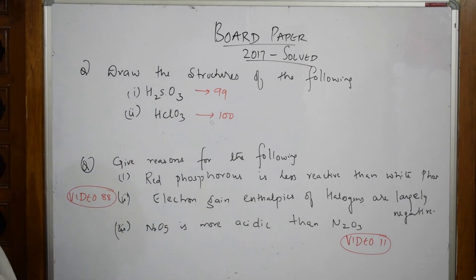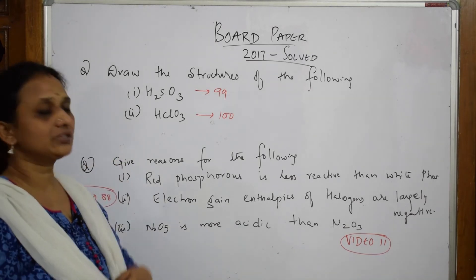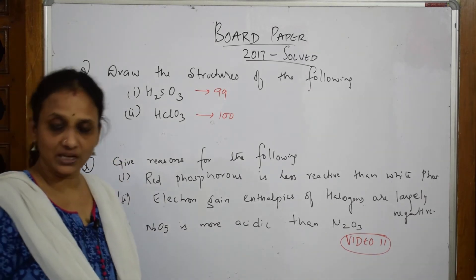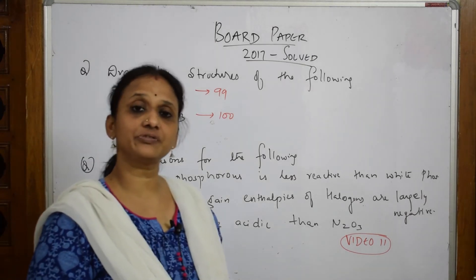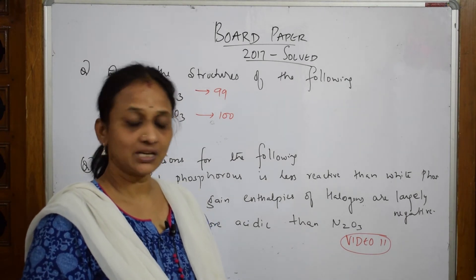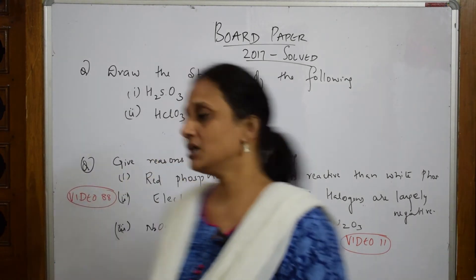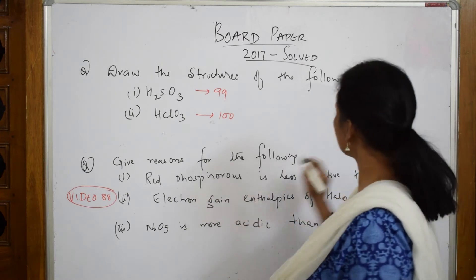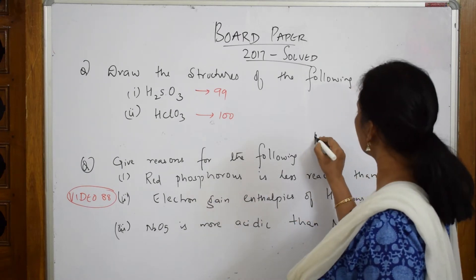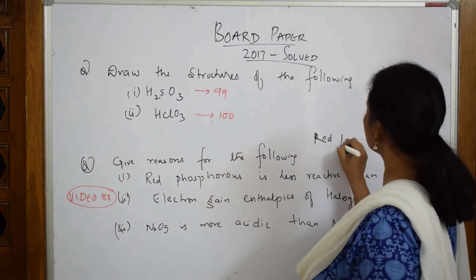They've also given a reasoning question: red phosphorus is less reactive than white phosphorus. I've already given you the differences between red and white phosphorus. Now they're asking you to write the reason. When we speak about red phosphorus being less reactive, we need to look at its structure.